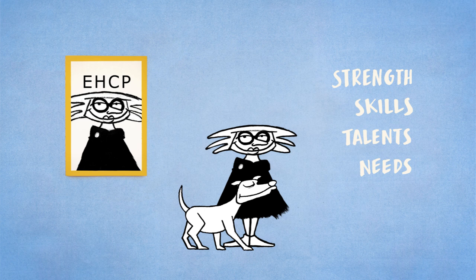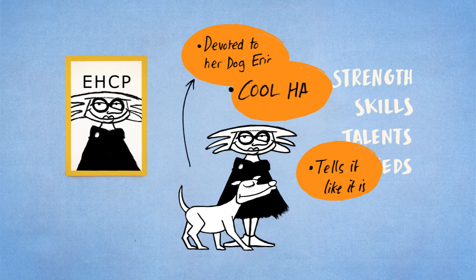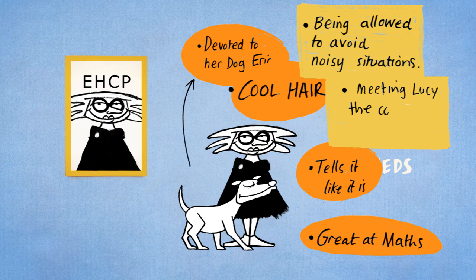It is essential that sufficient detail is identified in order to fully understand and appreciate exactly what it is that's meaningful to the person and what good support looks like to make that happen. It is vital that it reflects what's possible and not just what is available.